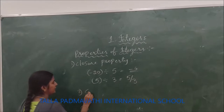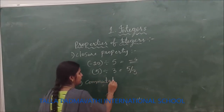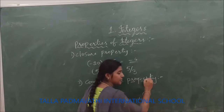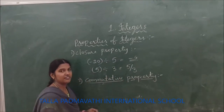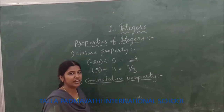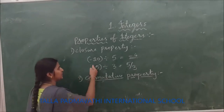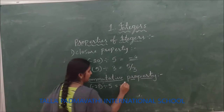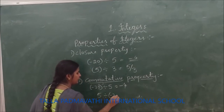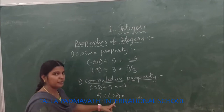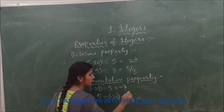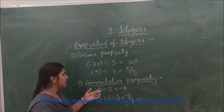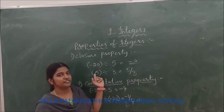The next property is commutative property. If you take any two integers A and B, A divided by B should equal B divided by A. Let us take minus 20 divided by 5 — the answer is minus 4. But if you reverse and divide 5 by minus 20, you get minus 1 by 4. Both are not the same, so commutative property is not satisfied under the division of integers.